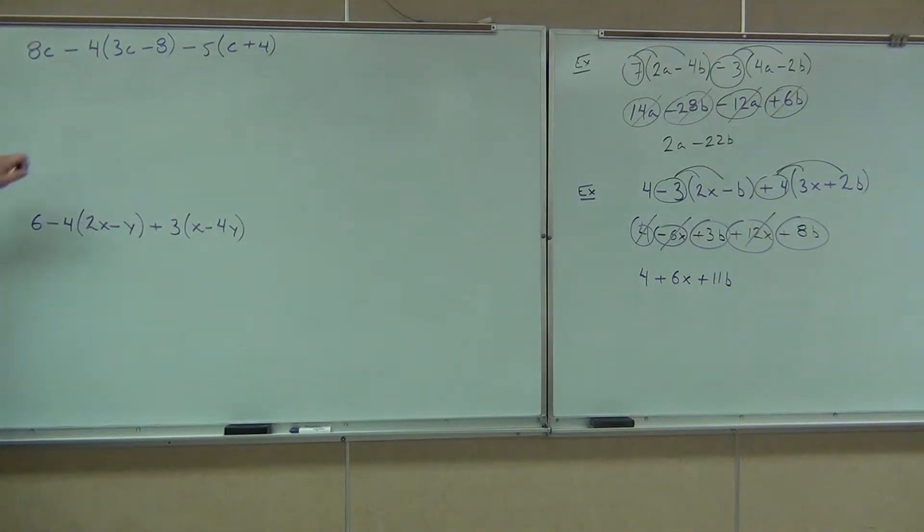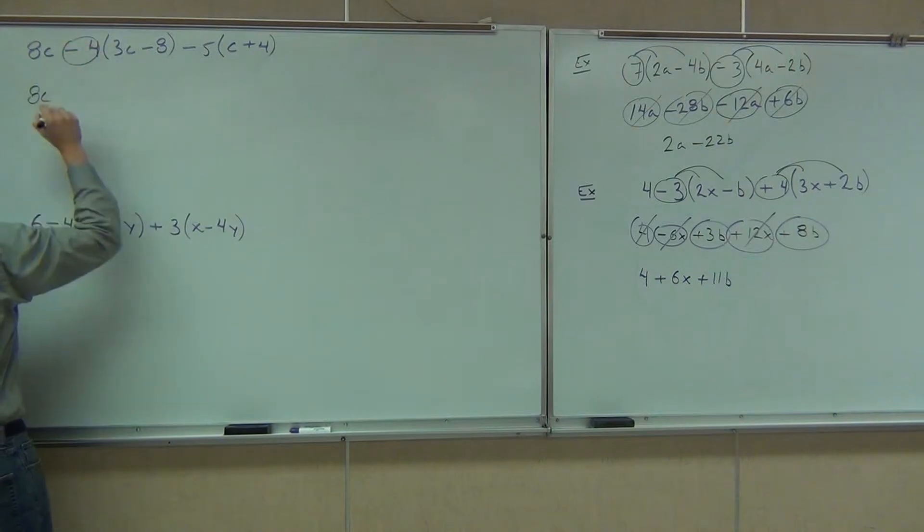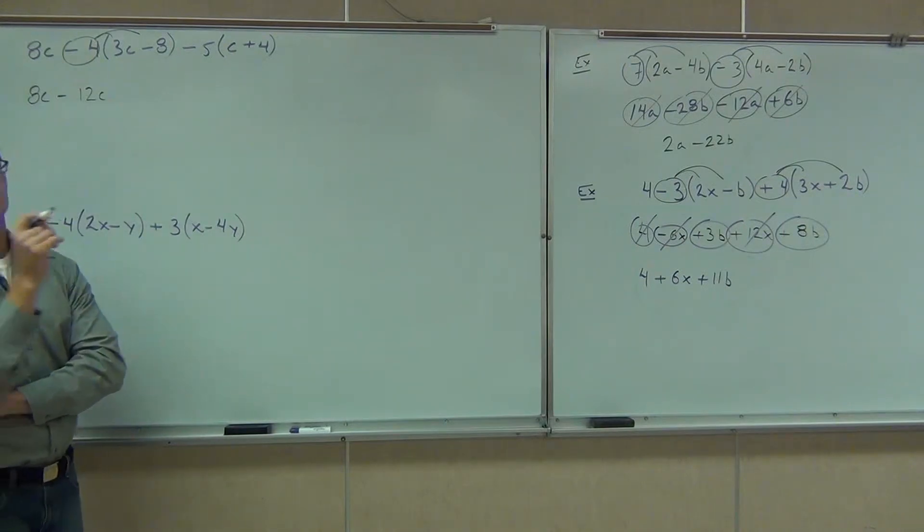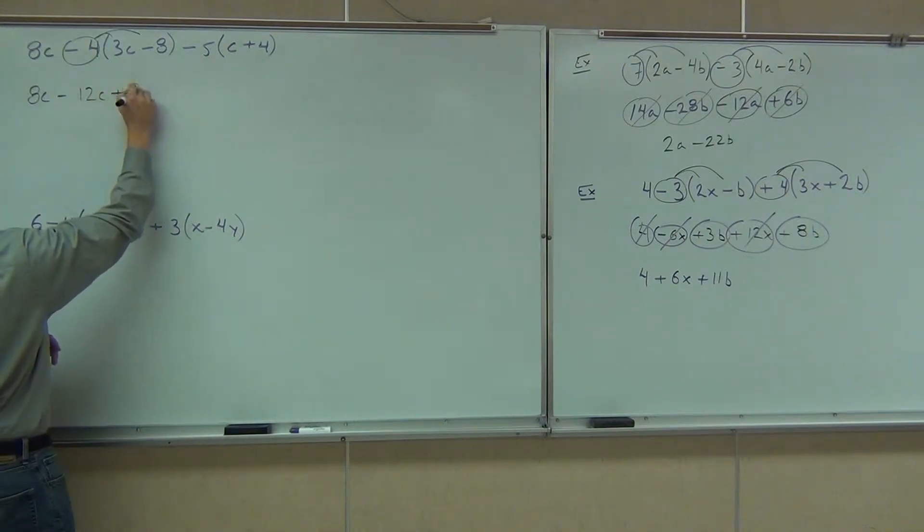All right. Let's see what we have on this problem. What are we going to do with that 8C? Does that do anything at the beginning of our problem? No. Let's just bring that on down. What are we going to distribute with our first parentheses? The negative 4 with the 3C. Great. So, I'm circling that negative 4. When I distribute it, I hope on your paper you got the correct answer which is negative 12C and then what? Positive. Plus or minus 32? Positive. Good.